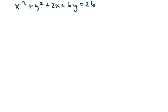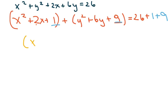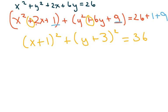Here we have one more — all pluses. x squared plus 2x: what goes here? Half of 2 is 1, squared is 1. Then y squared plus 6y: half of 6 is 3, squared gives 9. Doing this more mentally now, without boxes. The right side equals 26 plus 1 plus 9. Simplifying: x plus 1 squared, plus y plus 3 squared, equals 36. Center is negative 1, negative 3, and r is 6.